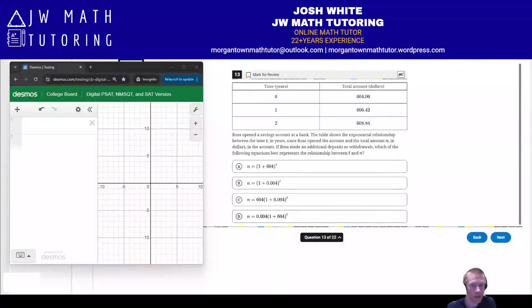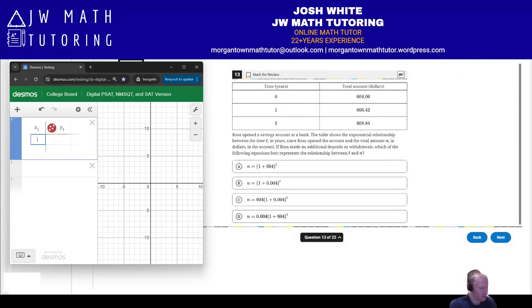The first question we're going to take a look at here is number 13 from Practice Test 1 in the Blue Book app, Module 1. And this is an exponential function. They tell us the problem. So I'm going to show you how you can just solve this quickly and easily doing an exponential regression. So just go ahead and make a table. Type in all the values.